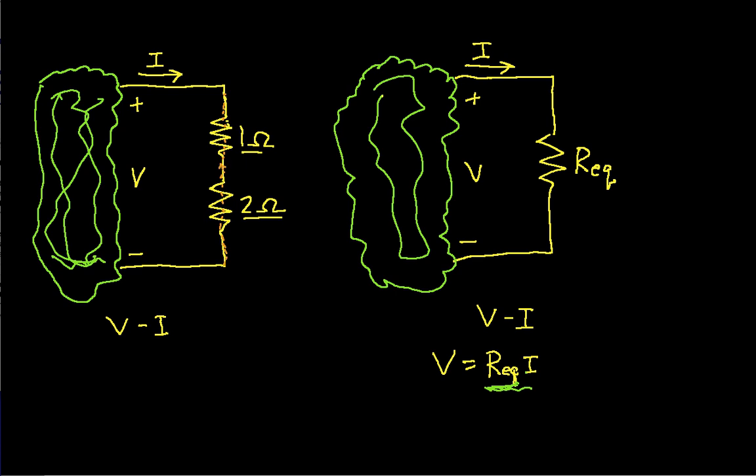If there was a component connected here, then these two resistors would not be in series. But since there's no other components connected between the two resistors, they are indeed in series.